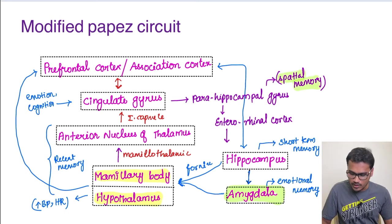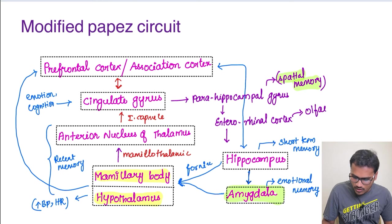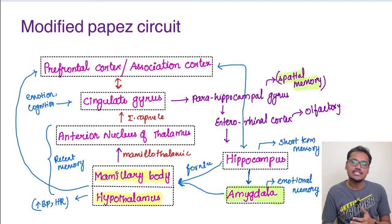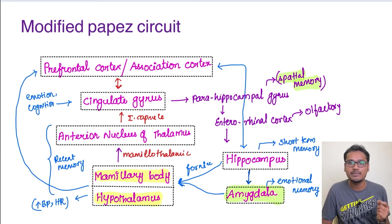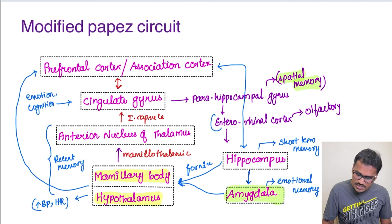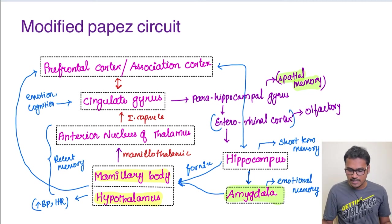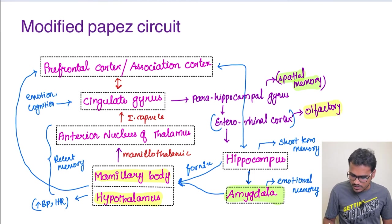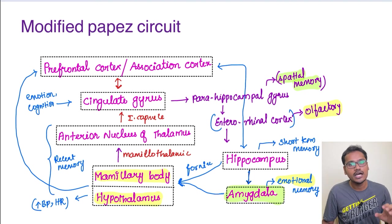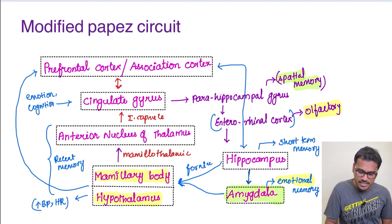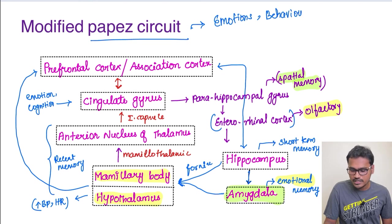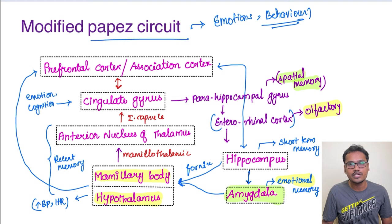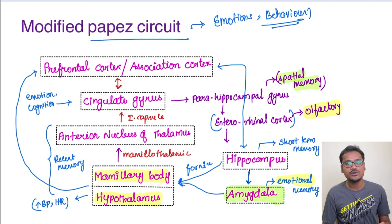Coming to the entorhinal cortex, it is involved in olfactory memory. All of us would have observed that when any dish is being cooked and you smell it, sometimes we connect it to emotions — it is cooked by my mother, it is cooked by my grandmother. These emotional memories and olfactory memories are very much in close association, because the entire limbic system is connecting them through and through. So the modified Papez circuit as a whole is controlling the emotion as well as the behavior of the person, with behavioral output determined by the prefrontal cortex.